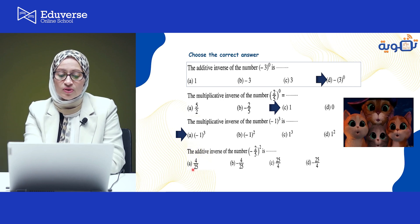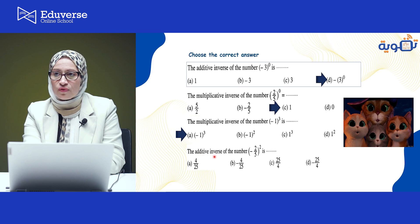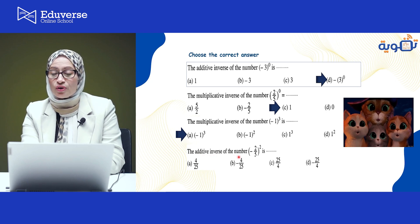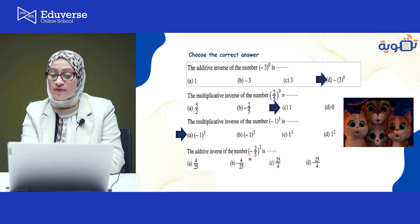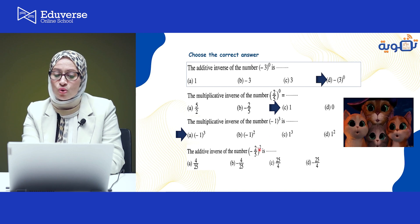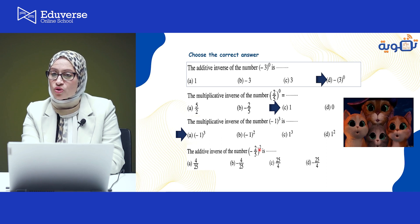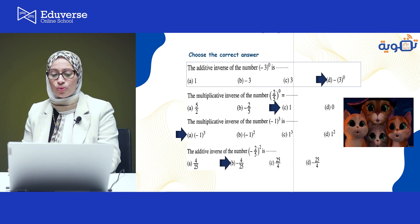The additive inverse — remember the meaning: the opposite sign. The additive inverse of (−2/5)² equals what? Since the power is even (2), the result is positive: (2/5)² = 4/25. The additive inverse of 4/25 is negative 4/25.